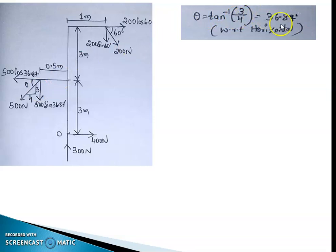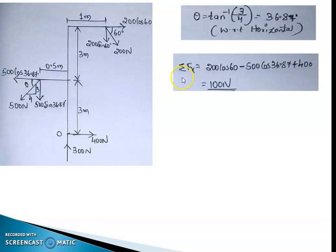That gives 36.87 degrees with respect to the horizontal axis. So the 500 newton force acting away from the point of consideration has two components: 500 cos 36.87 acting in the left direction, and 500 sin 36.87 acting downward. Once we have these, we start developing the Fx and Fy equations.